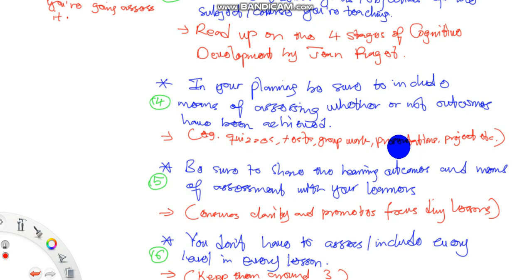What am I going to use to test whether or not my children have mastered this content? And then fifth, you have to be sure to share your learning outcomes and means of assessment with your learners. Often teachers just come and teach what they want to teach.